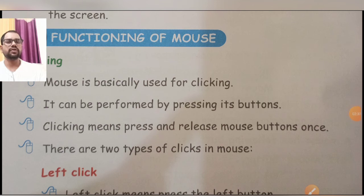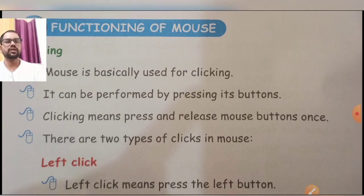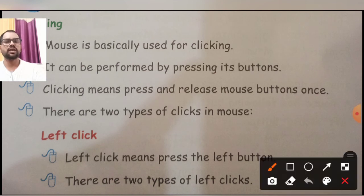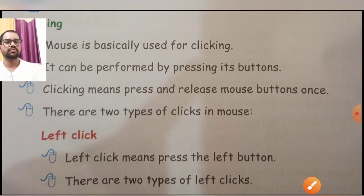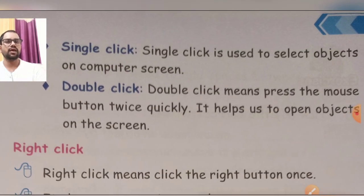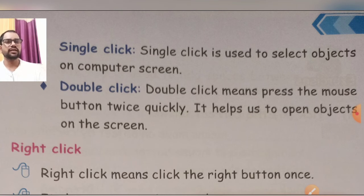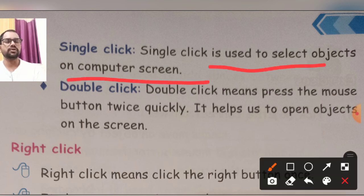There are two types of clicking on the mouse — mouse me basically two types of clicking hoti hai: first aapki kya hai left clicking, aur second kya hai right clicking. Left click means press the left button. There are two types of left click: first is single click and second is double click. Single click kya karna hai — basically single click is used to select objects on the computer screen. Single click se kya karte hai: aapni jo monitor ki screen hai, us pe kisi bhi icon ko ya aapki kisi folder ko select kar lete hai.